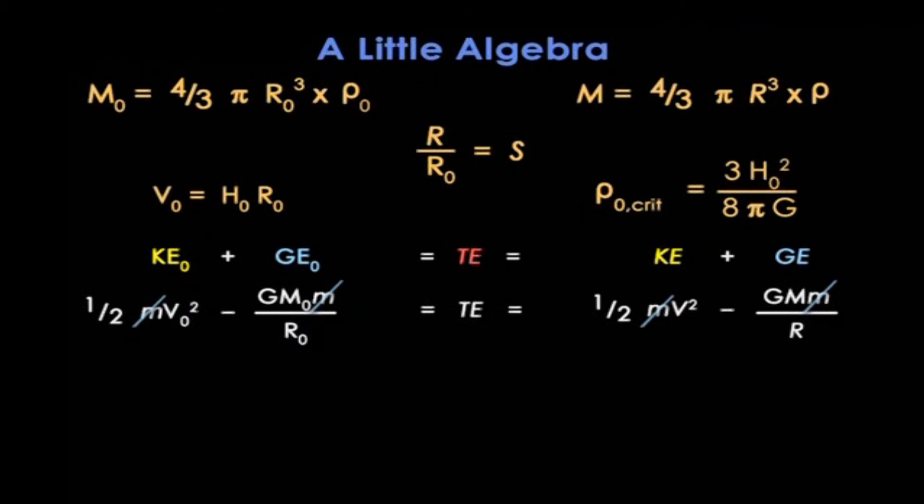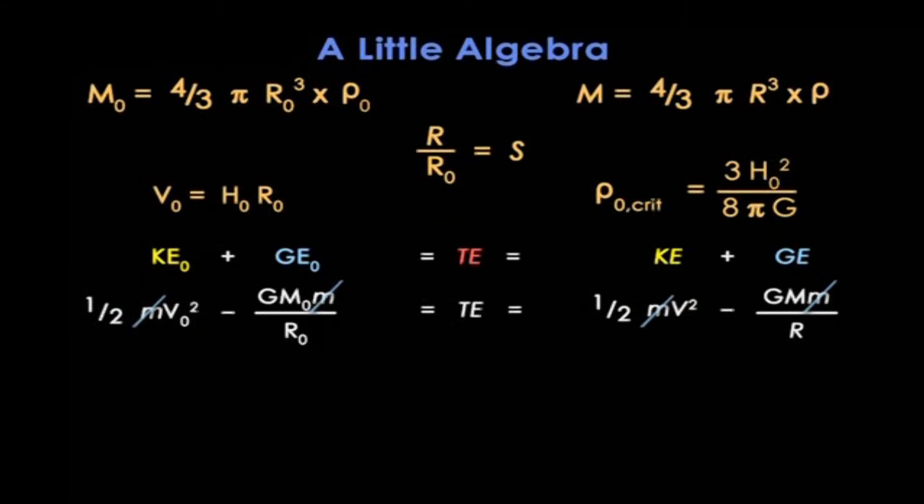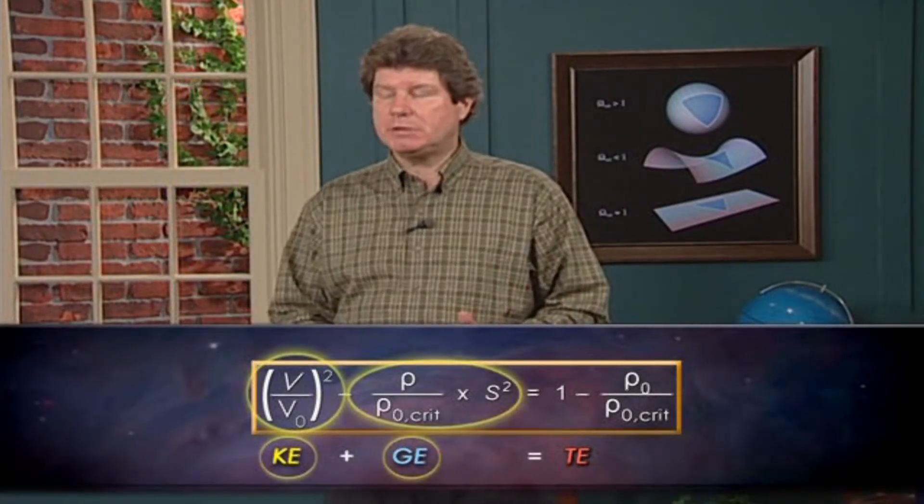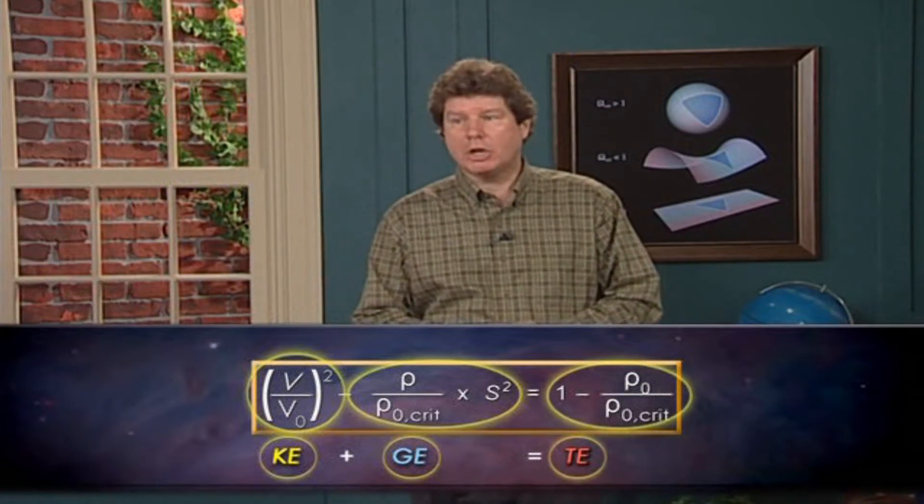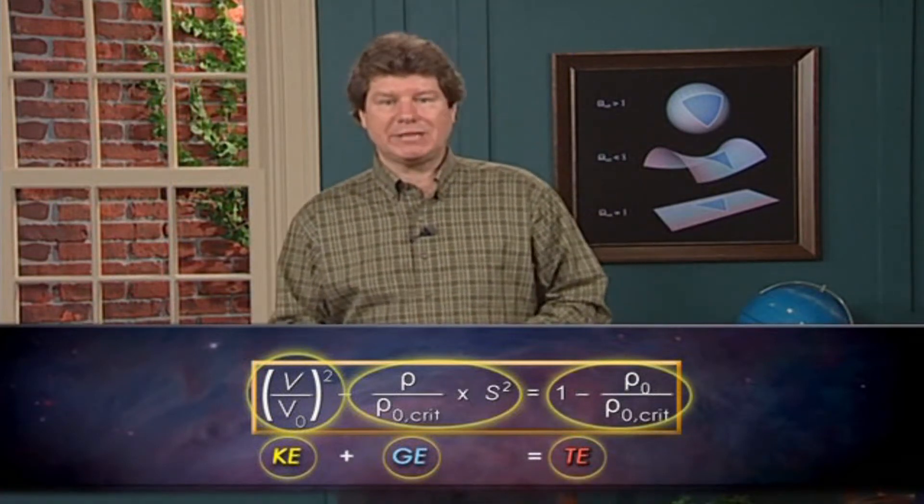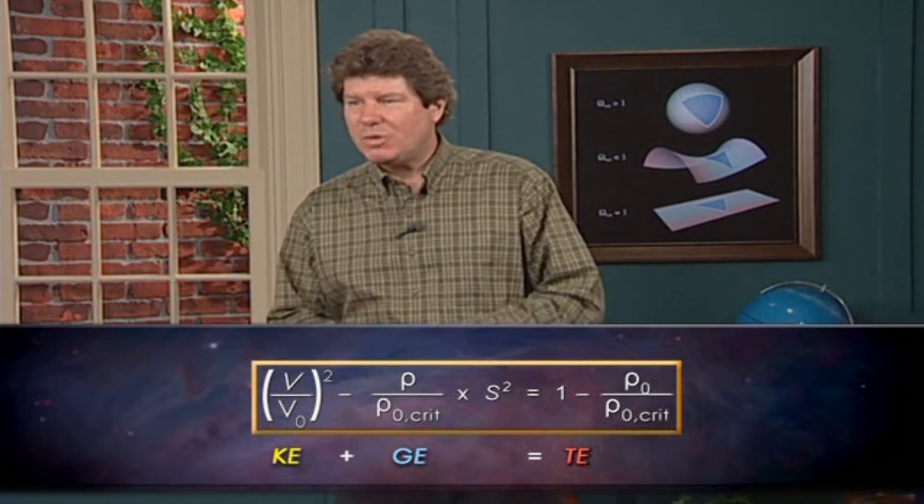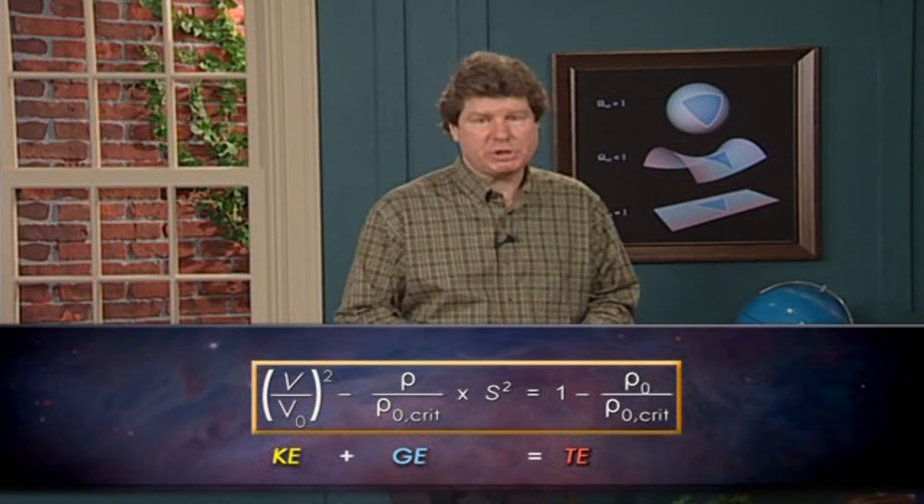So at this point, we just dust off our high school algebra and plug all these little equations into the big one, and tinker for a while, until we come up with this new equation. Now, I'm going to postpone looking at this equation in detail until next lecture, so for now, just notice two things. First, there are three terms, two on the left and one on the right, corresponding to our original terms for kinetic and gravitational and total energy, though here, they're expressed a little differently as ratios.